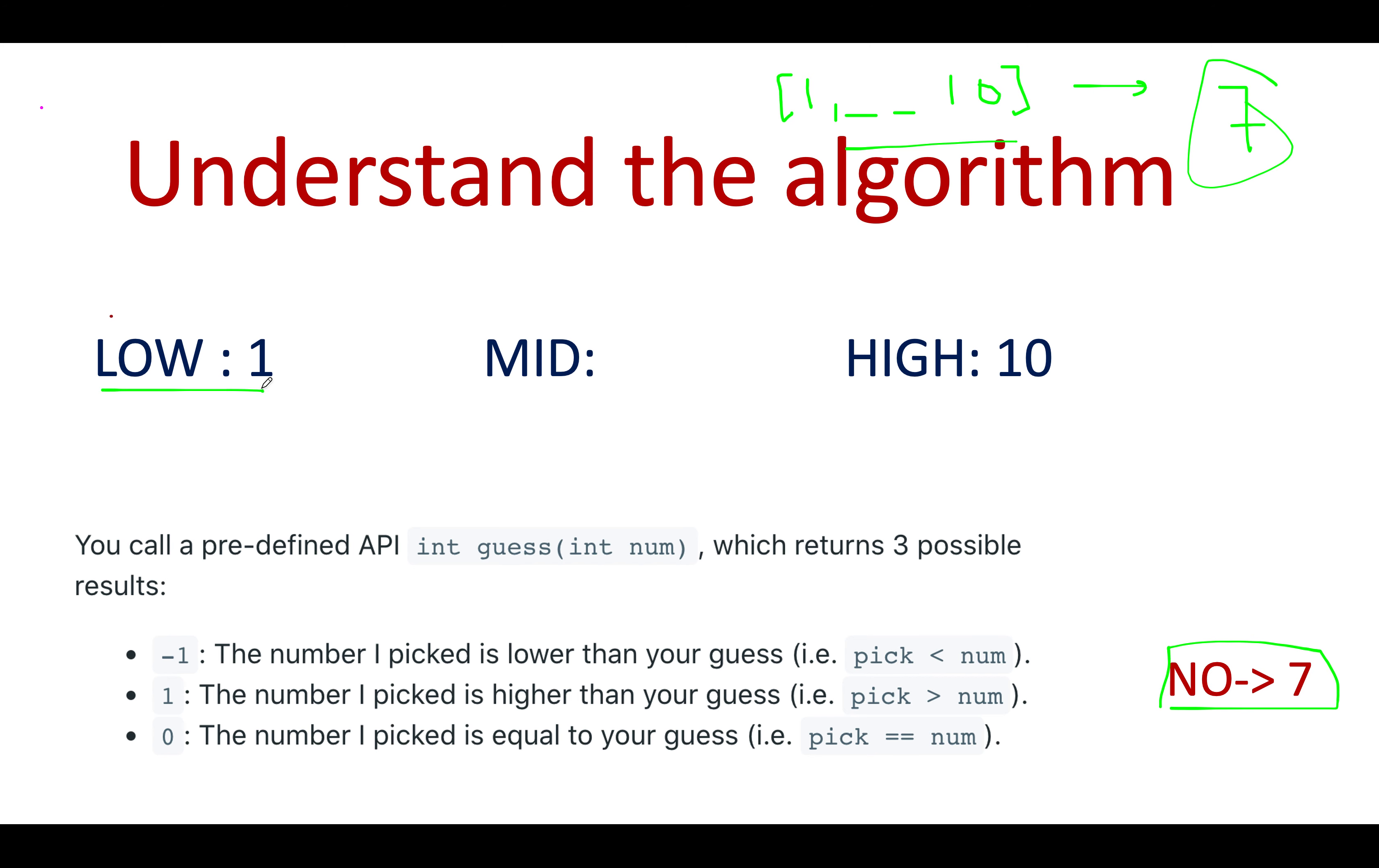What we are going to do: we'll assign two variables, low to the lower end of the range which is one, high to the higher end of the range which is 10. Now let's calculate the middle element, which would be equal to one plus 10 by two. 11 by 2 is five, so the number that you are guessing happens to be five. What we are going to do: we'll pass in this number to this helper method which is guess. We'll invoke guess on five.